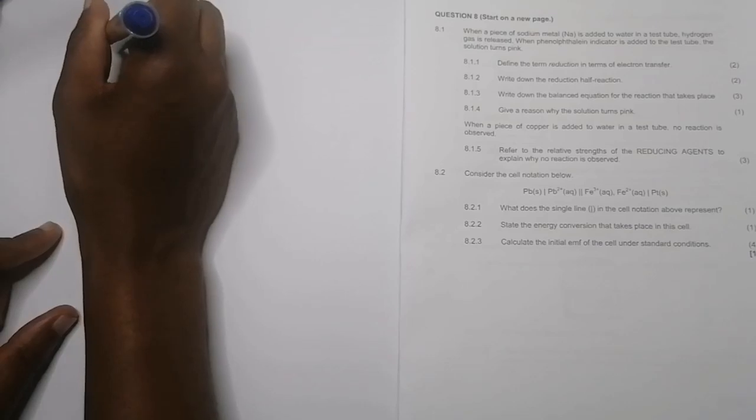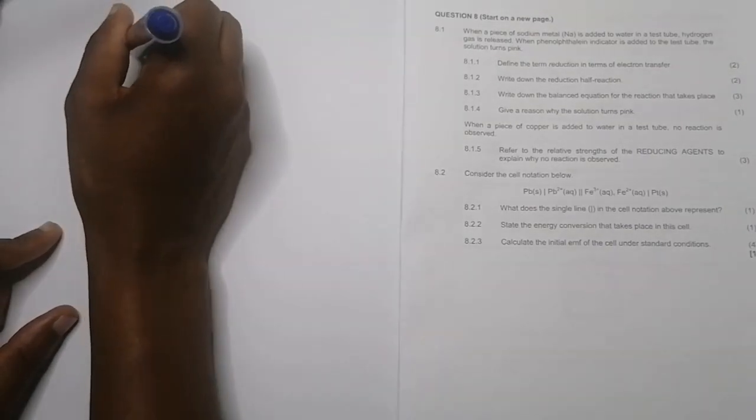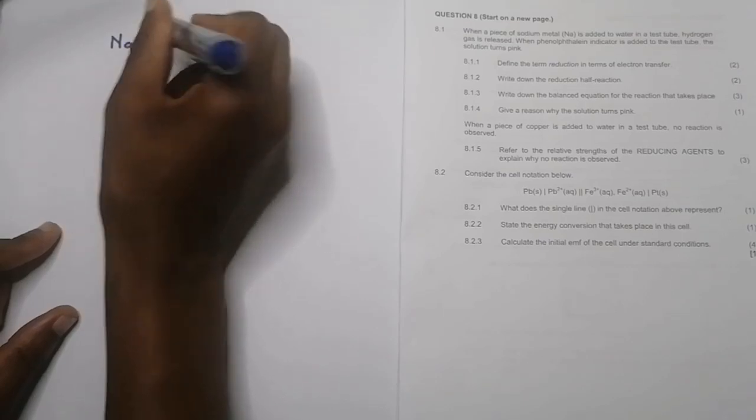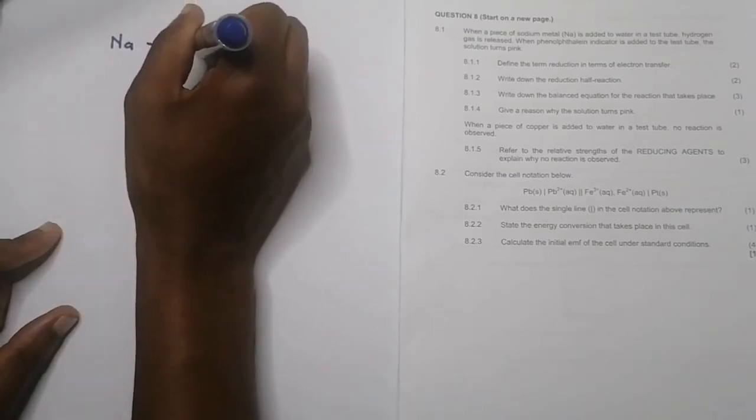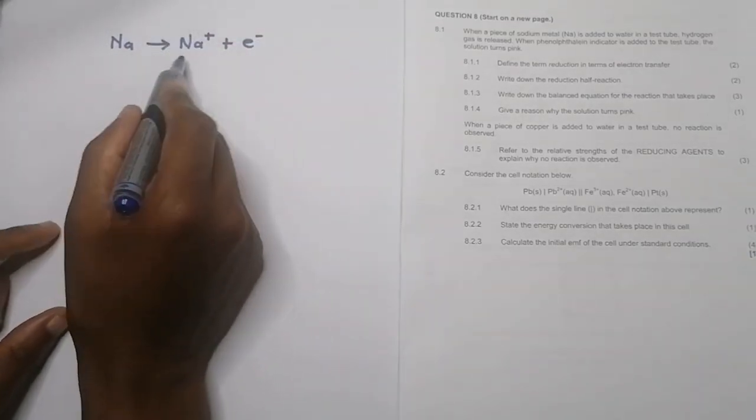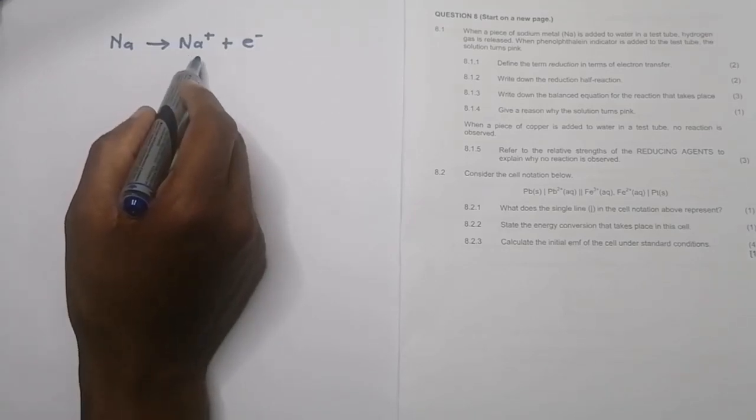Let's have a quick look at this question, very interesting way of asking about that galvanic cell redox reactions. So they say when a piece of metal is added to water in a test tube, they say hydrogen gas is released. Keep in mind we've got sodium and we've got water in this mix.